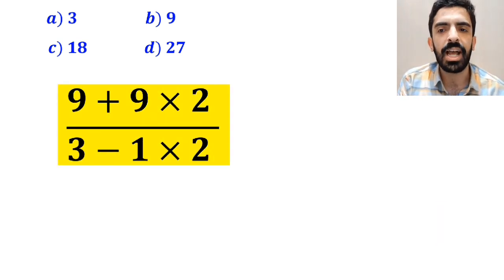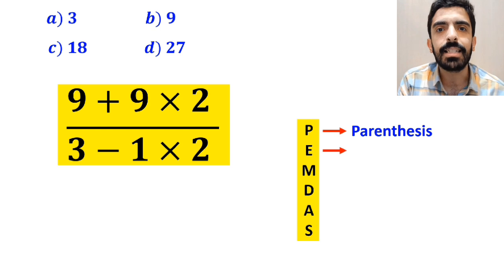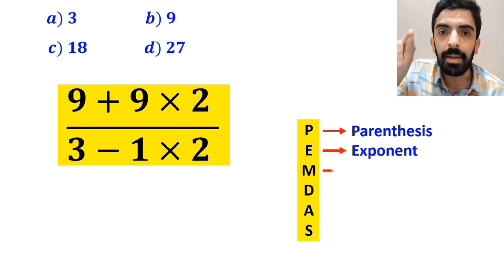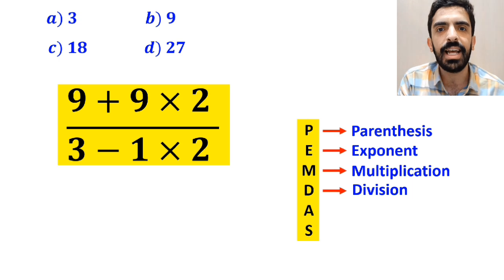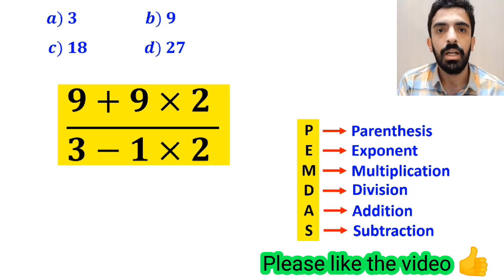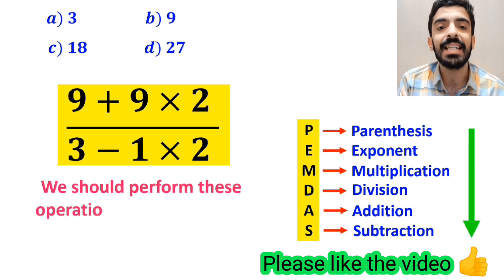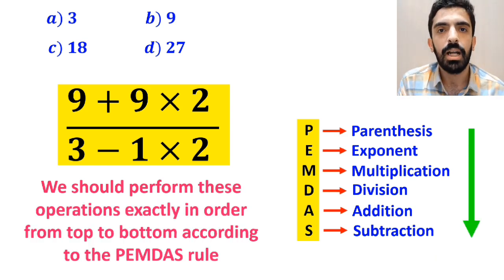To solve this question, we need to follow a rule that is called PEMDAS. In this rule, P stands for parentheses, E stands for exponent, M stands for multiplication, D stands for division, A stands for addition, and S stands for subtraction. We should perform these operations exactly in order from top to bottom according to the PEMDAS rule.